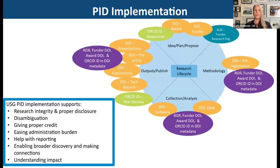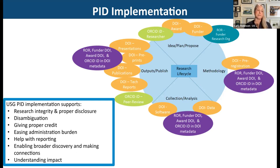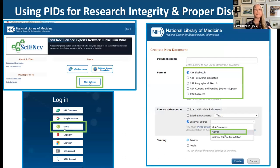Looking at the benefits of persistent identifiers: PIDs can be used all the way through the research lifecycle. From the U.S. government perspective, PIDs support research integrity and proper disclosure, researcher and organization disambiguation, ensuring people receive proper credit, easing administrative burden and helping with reporting, enabling broader discovery, and connecting elements throughout the research lifecycle to help understand the broader impact of funding.